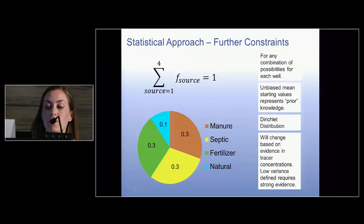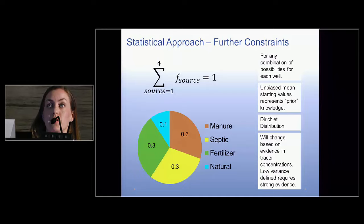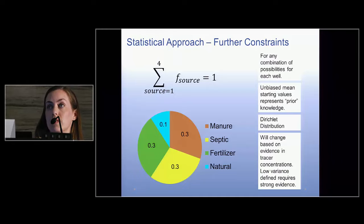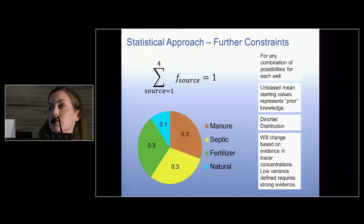A further constraint is that we told the model the fractional contributions of all sources must sum to one. We gave each source the same starting point: a mean value of 0.3 assigned to manure, septic, and fertilizer, and 0.1 for natural sources — reflecting that natural sources are expected to contribute less. This is an unbiased starting value, implemented using the Dirichlet distribution and given a low variance, requiring strong evidence from the tracers to move estimates away from this initial assignment.